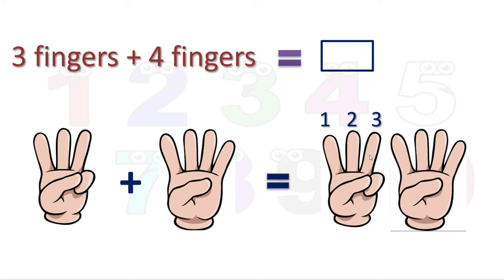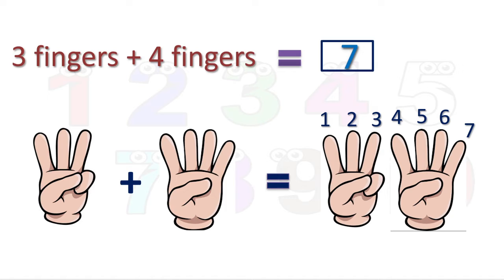Now what we will do? We will count forward. After 3 comes 4th, then 5th, then 6th, and the last one — 7th finger. What did we do? We counted in the forward direction. After 3, we counted 4 numbers and we got the last number 7. So 7 is our answer. 3 fingers plus 4 fingers together give us 7 fingers.